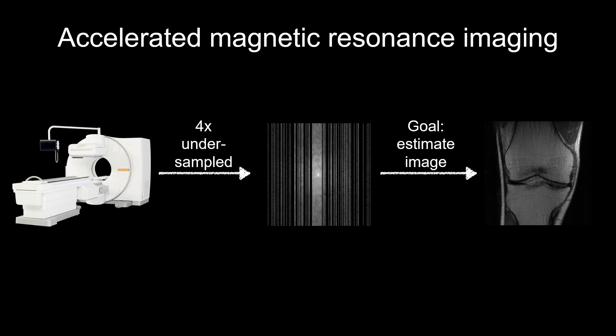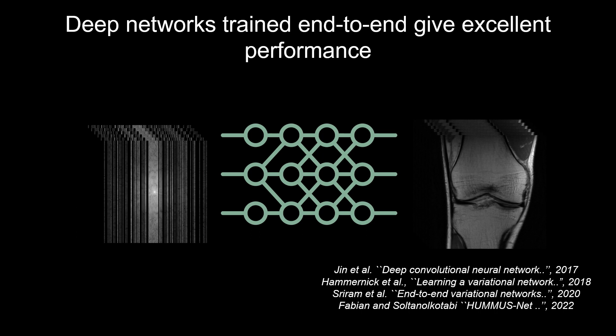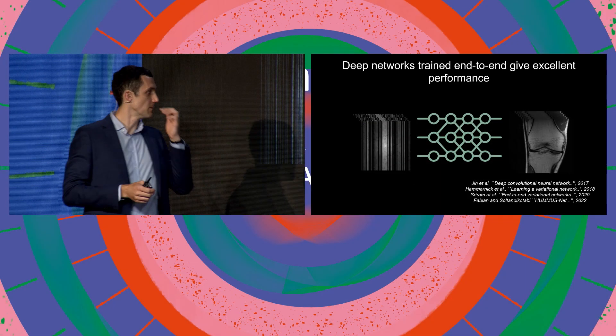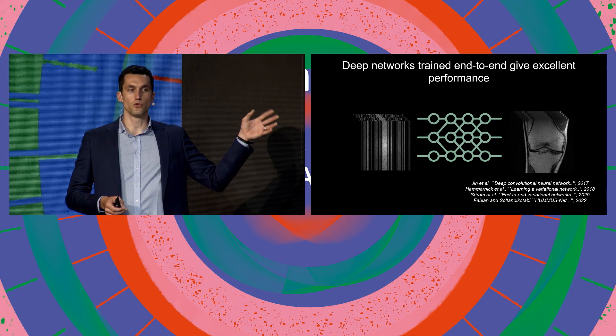So how does this work? Here's an example: accelerated magnetic resonance imaging. An MRI scanner collects measurements — here's how these measurements look: white lines are data you collect, black lines are data you don't collect. So you're collecting too little data to reconstruct your image, making it a very difficult problem. The way neural networks come in is you train a neural network to take this measurement as input and output the clean image. You collect a lot of pairs of measurements and images — it's very difficult to collect, but people have figured that out — and then you train a neural network to do this mapping.